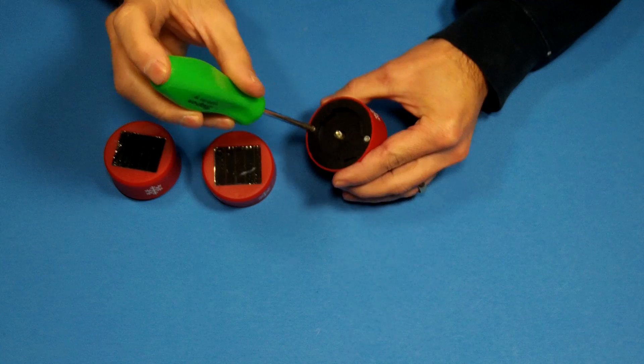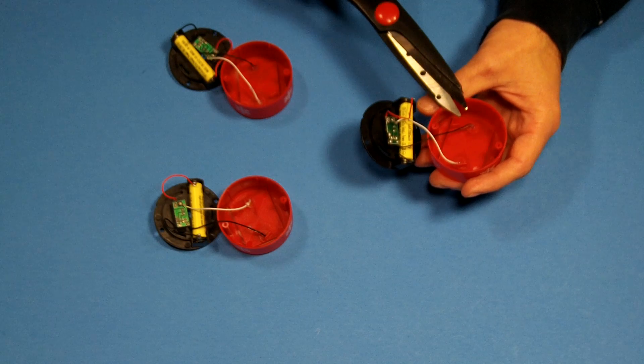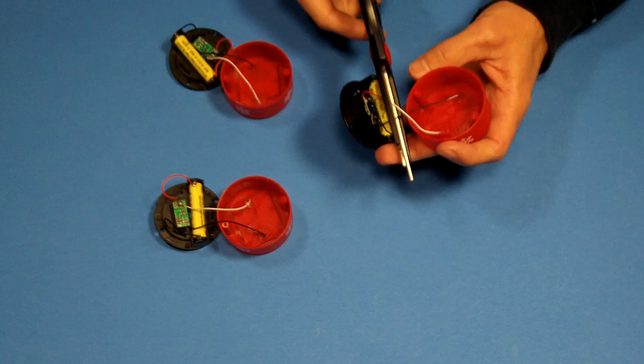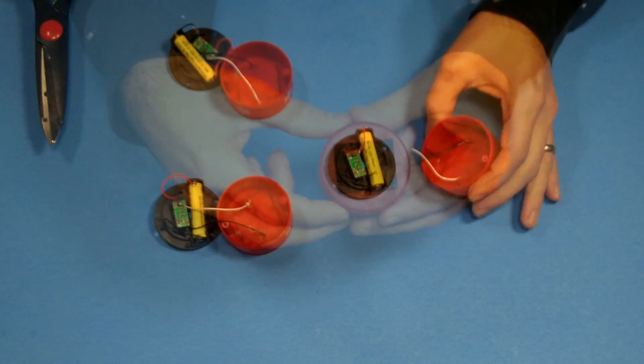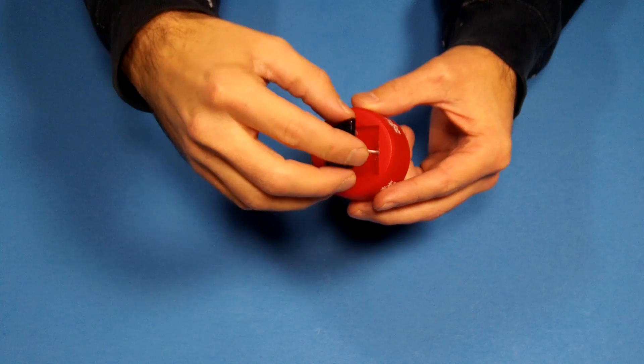First, dismantle your stake lights. Next, cut your wires from your solar cell to your circuit board. Carefully remove the solar cell from the plastic cap.